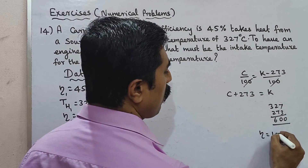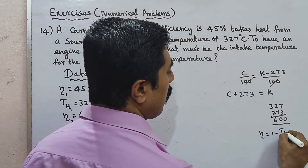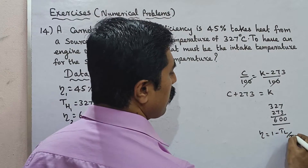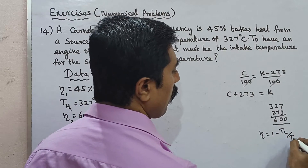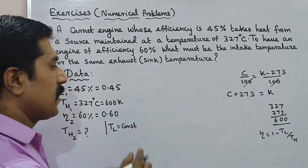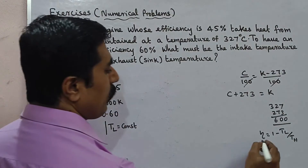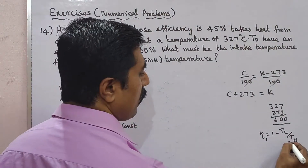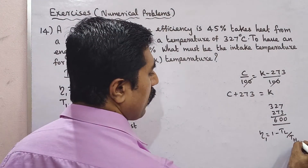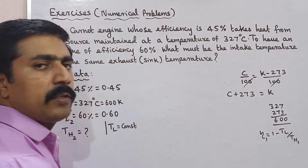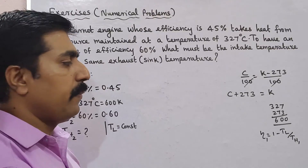The efficiency formula is: eta equals 1 minus TL divided by TH. We will apply this for the first case, eta₁ with TH1.